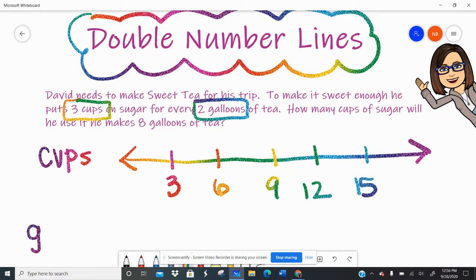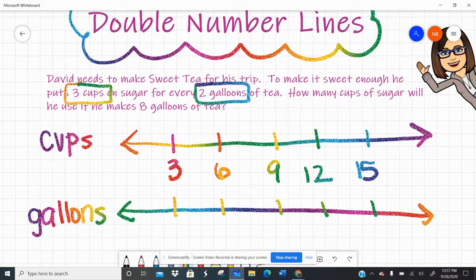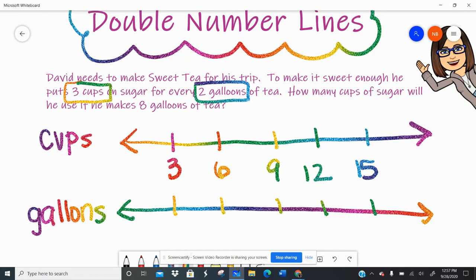And then we're talking about gallons of tea. So here's gallons down here. I'll label it and then let's draw my number line. And remember, it's super important to line up your dashes. They need to be right under each other. But for gallons, we're going to count by twos. So two, four, six, eight, and 10.